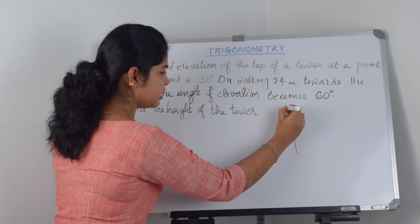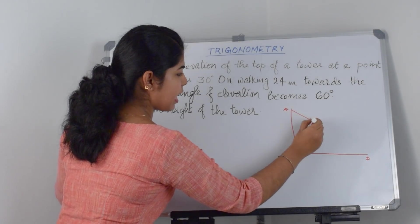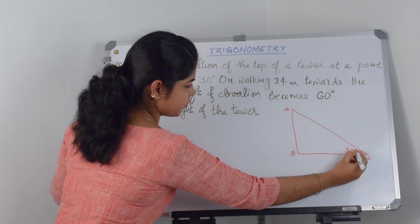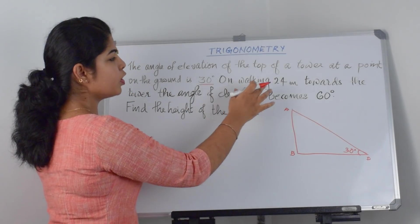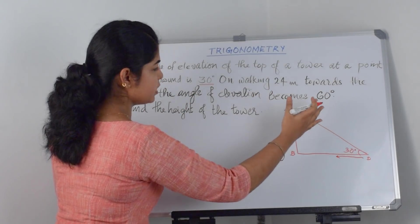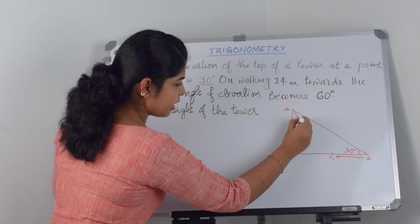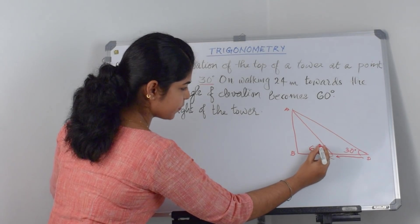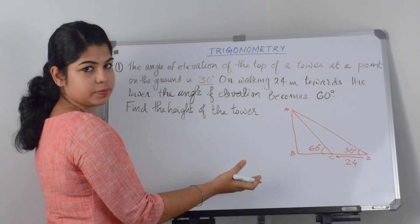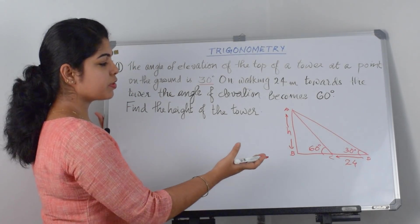I am drawing AB as the tower. From a point — I am taking it as D — the angle of elevation to the top of the tower is 30 degrees. Then, on walking 24 meters towards the tower, that means walking in this direction. On walking 24 meters towards the tower the angle of elevation becomes 60 degrees. So from this point — I am taking it as C — the angle of elevation is 60 degrees. The distance CD is 24. We are asked to find the height AB.